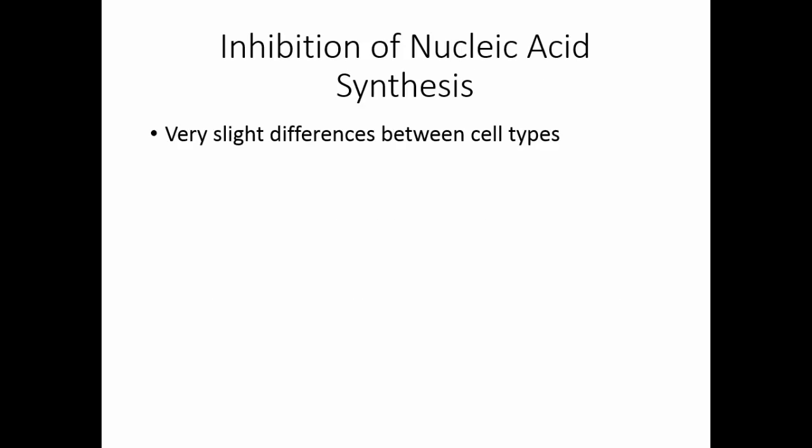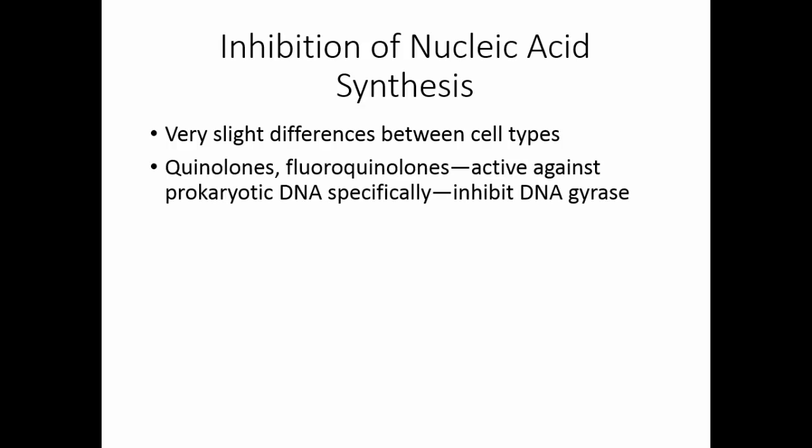Inhibition of nucleic acid synthesis is tricky because there are very slight differences between the cell types. Derivatives of quinine — the quinolones and the fluoroquinolones — are active against prokaryotic DNA specifically, so they have very low toxicity.